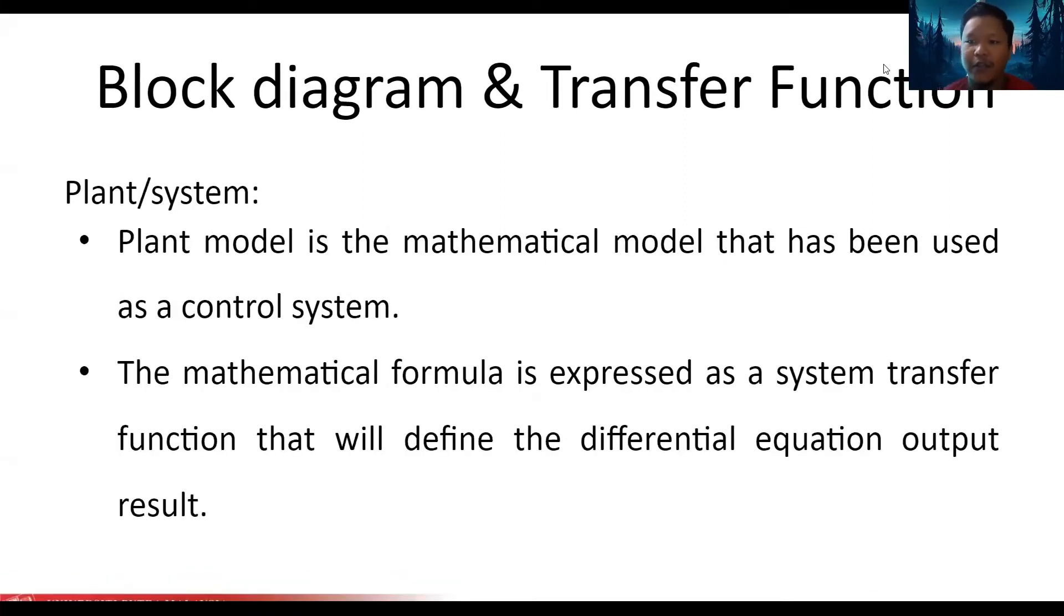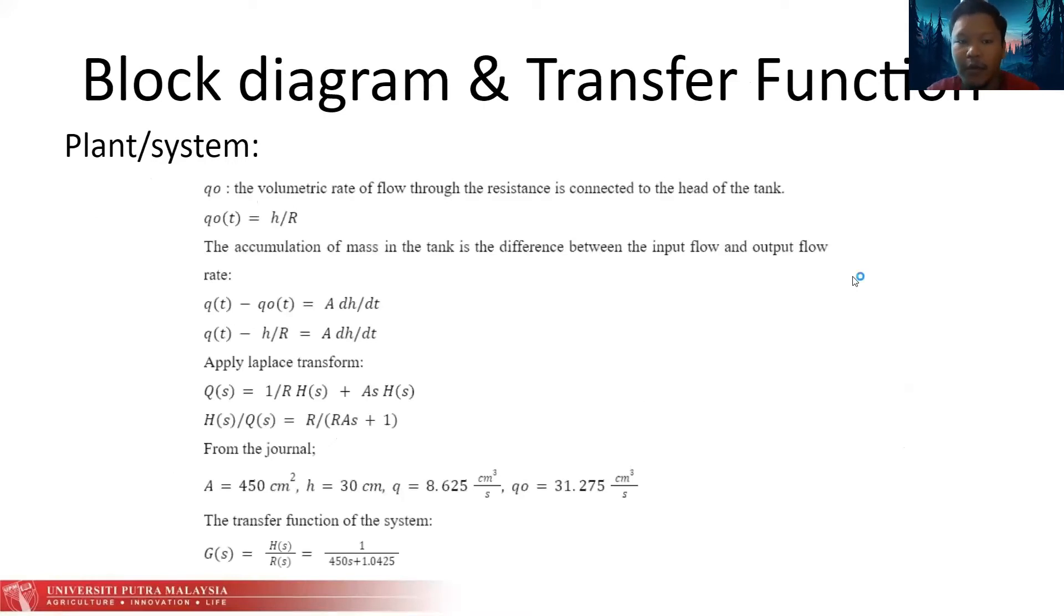I will continue with the plant of the control system. A plant model is the mathematical model that has been used as a control system. In order to produce a plant model, the application of the system must be defined and the corresponding differential equation must be measured. Plant model usually comes as a transfer function, either as a first order or second order transfer function. The mathematical formula expressed as a system transfer function will define the differential equation output result. Next, we will go for the mathematical model for the plant. If we want to produce a transfer function, we need to know the application.